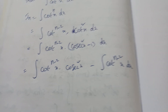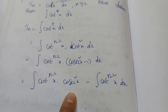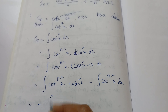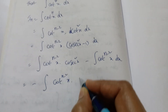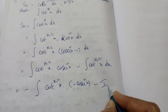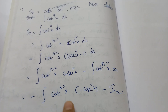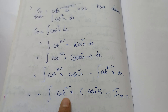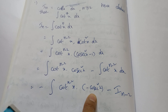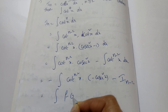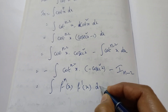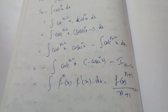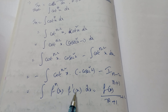Expanding: ∫cot^(n−2) x · cosec²x dx − ∫cot^(n−2) x dx. Now observe: the derivative of cot x is −cosec²x, so cosec²x is there (with a sign). We write −∫cot^(n−2) x · (−cosec²x) dx. Using the formula ∫[f(x)]^n · f'(x) dx = [f(x)]^(n+1) / (n+1), here f(x) = cot x and f'(x) = −cosec²x.